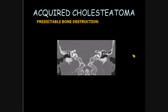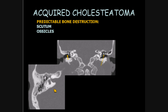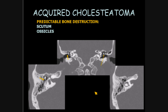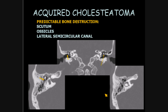Acquired cholesteatomas have predictable bone destruction. Erosion of the scutum is especially common — on this side we have an eroded scutum when compared to the normally sharp scutum on the opposite side. There's typically erosion of the ossicular chain; in this case, the body of the incus is absent, or for the most part, absent. Advanced cholesteatomas are associated with lateral semicircular canal fistuli, and this demonstrates some thinning and some erosion of the cortex of the lateral semicircular canal.